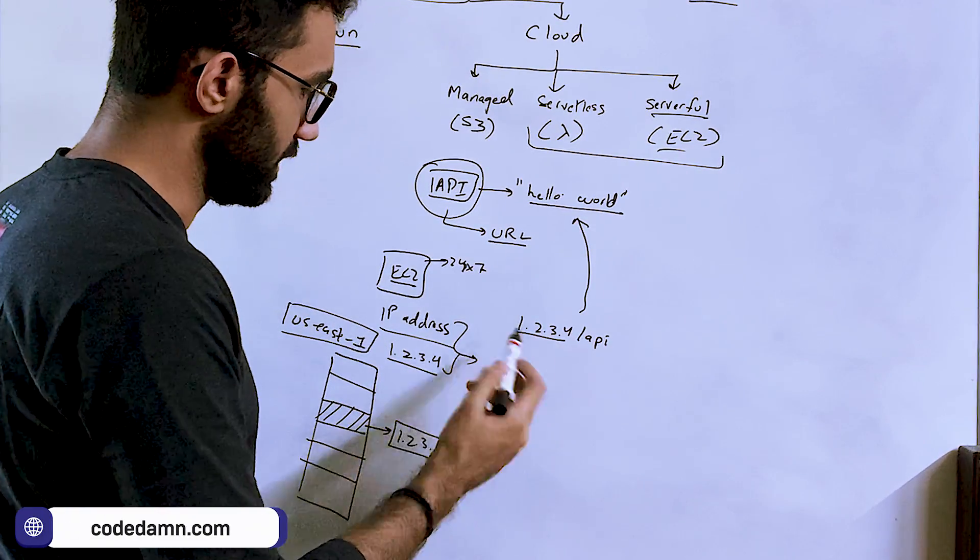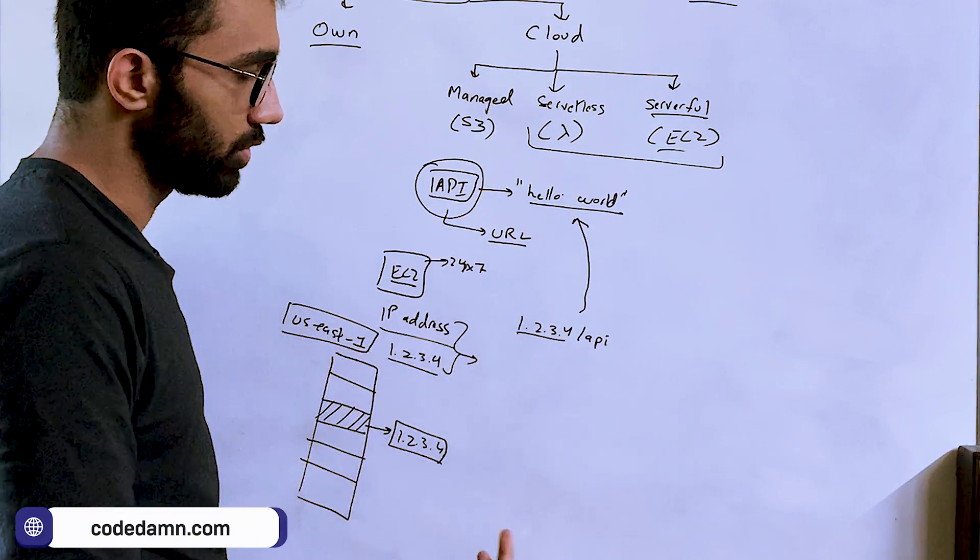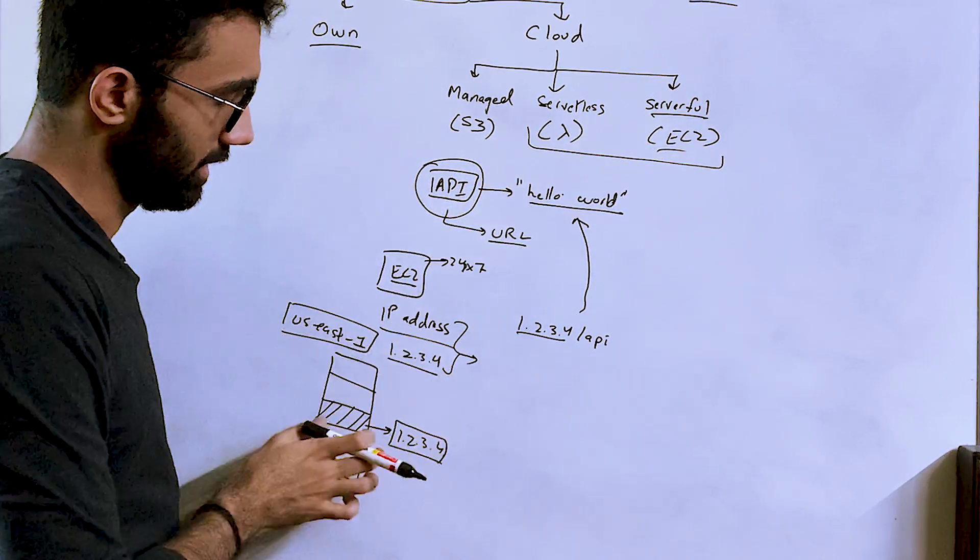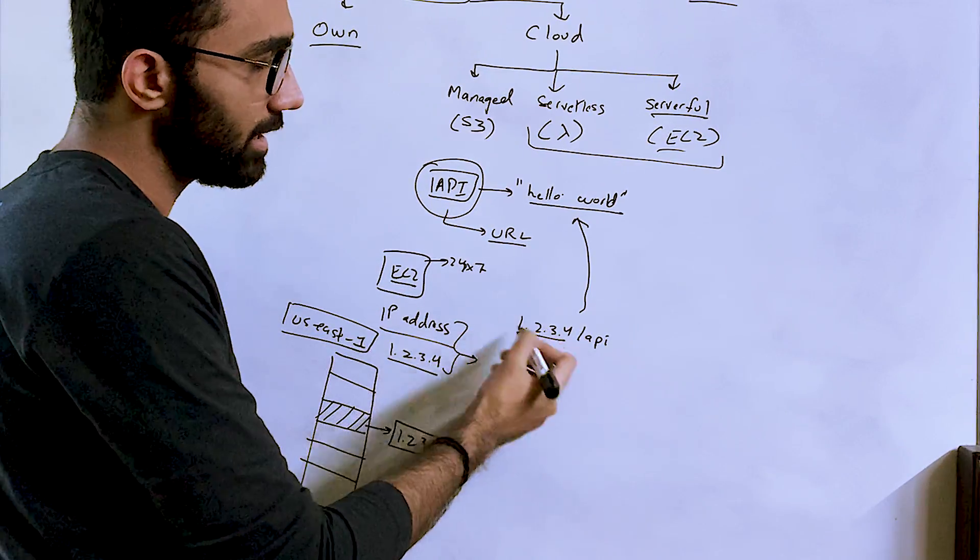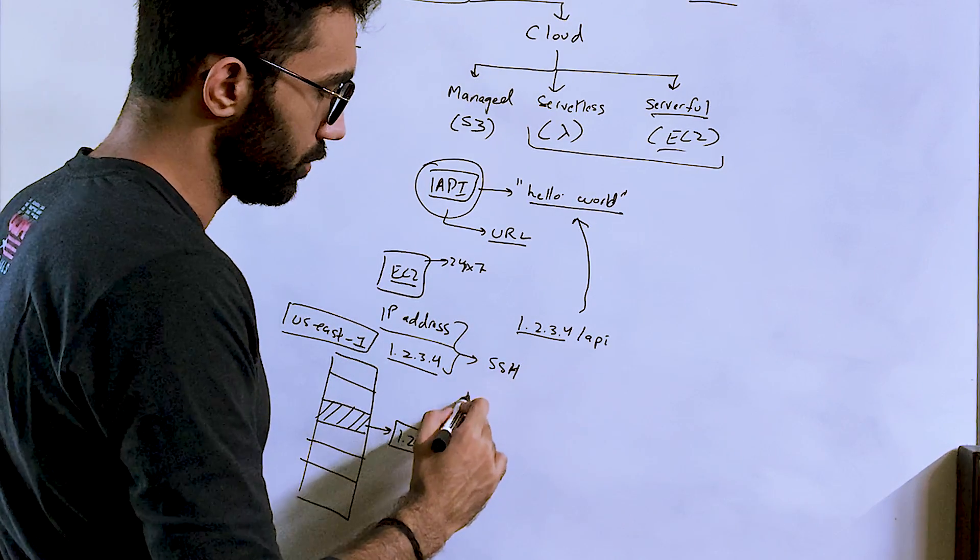If the server crashes, you have to restart it. Why? Because this is a computer. If the server goes down, you have to reboot it automatically yourself. Why? Because this is a non-managed serverful instance, which is just sitting out there as a rack. So even to create and deploy this API, what you have to do is you have to SSH into the server from your computer. You are sitting over here.